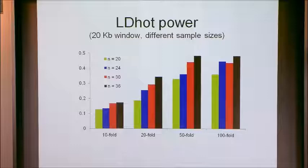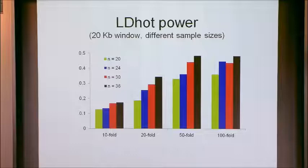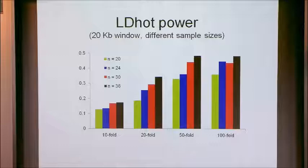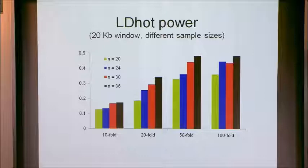Looking at different sample sizes, power generally increases when sample size increases. Power is pretty low when you only have 20 chromosomes — the equivalent of 10 individuals. But just moving from 10 to 18 individuals makes a huge difference — it really increases your power a lot. My basic thought is that things work well in humans because you can keep extrapolating this curve until you deal with like 60 individuals — 120 chromosomes — and it's going to be a lot better than with just 10.